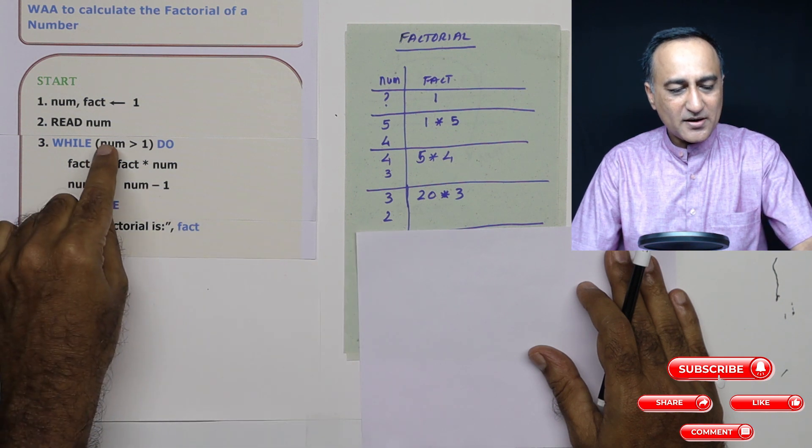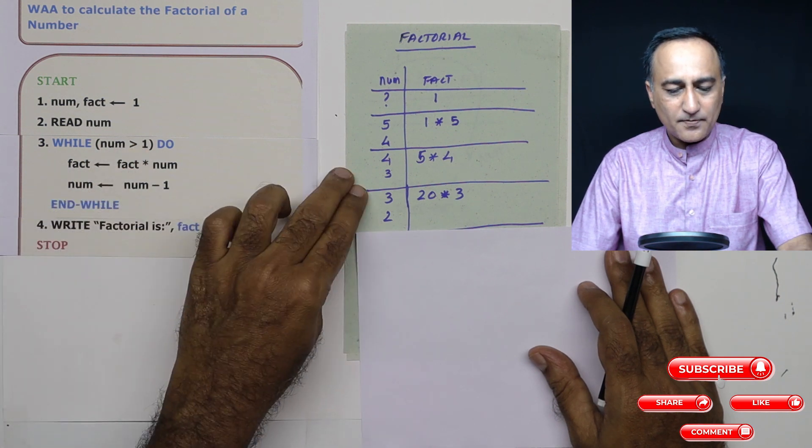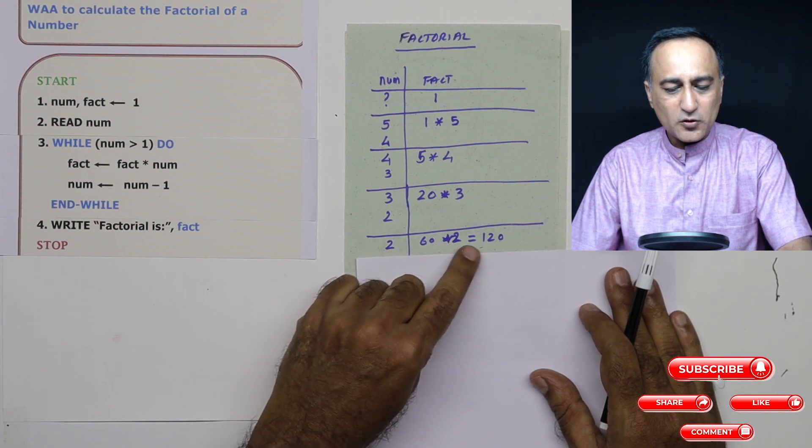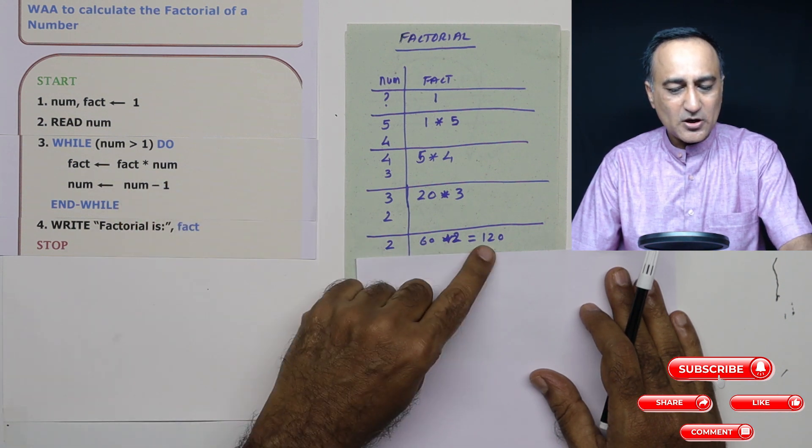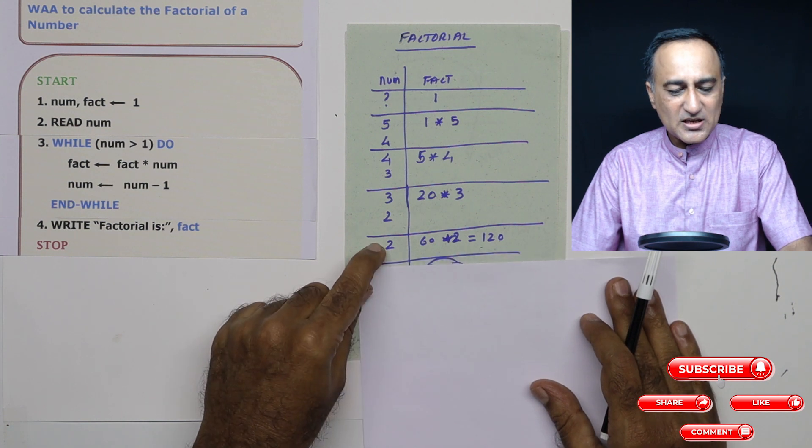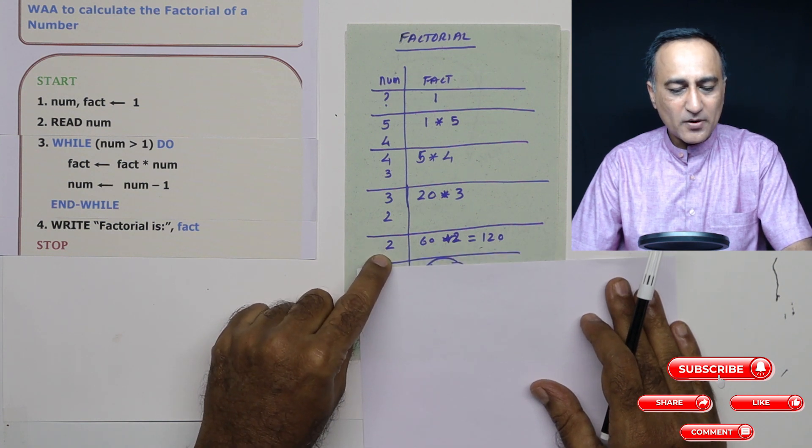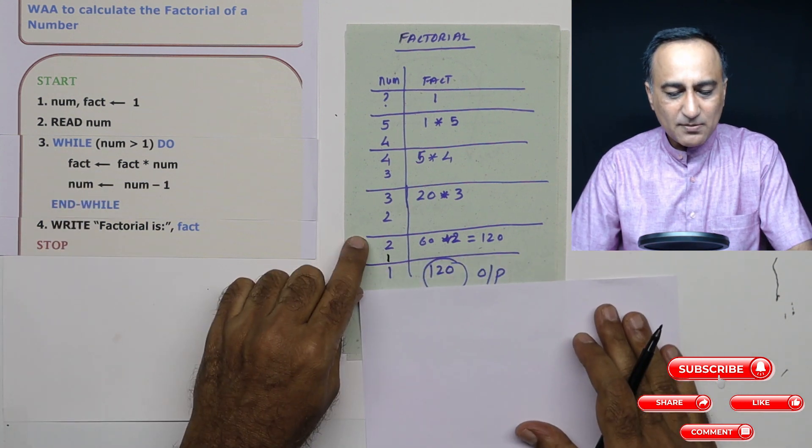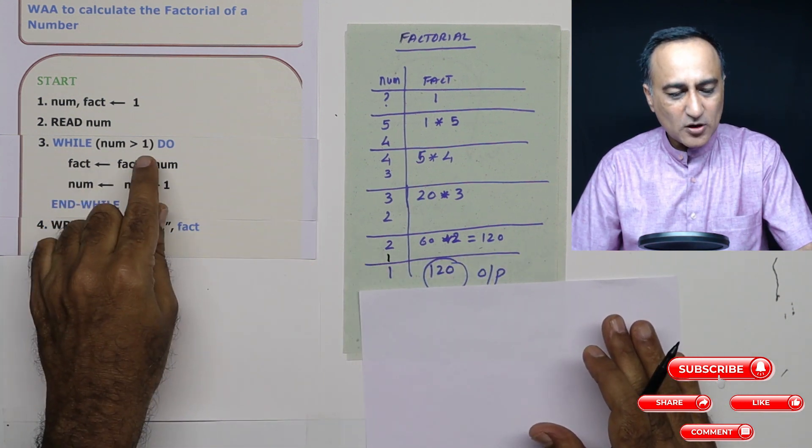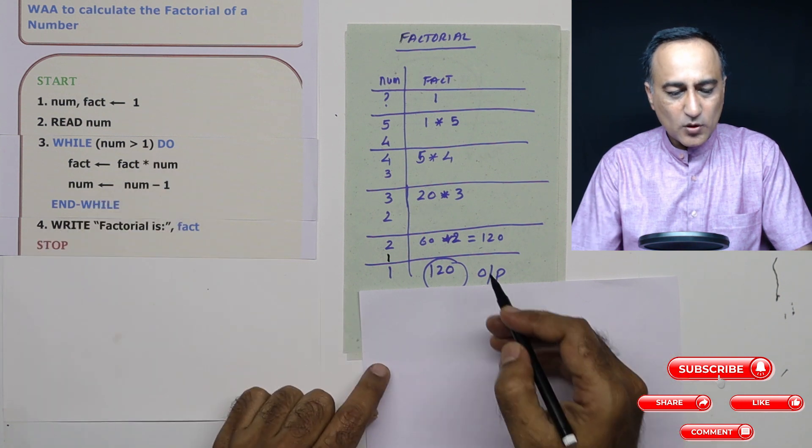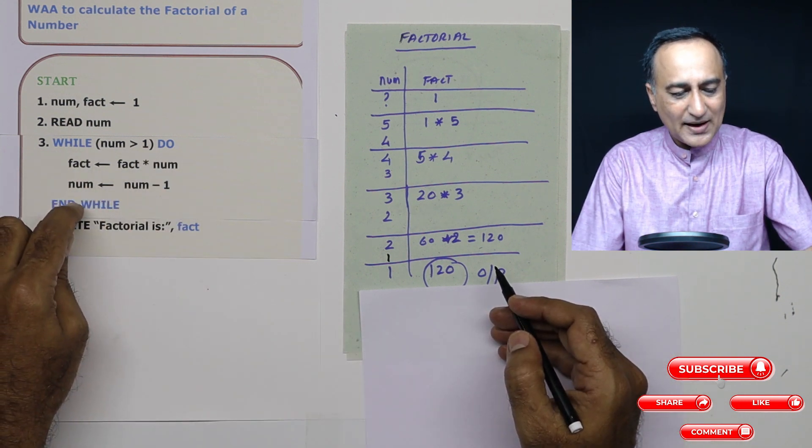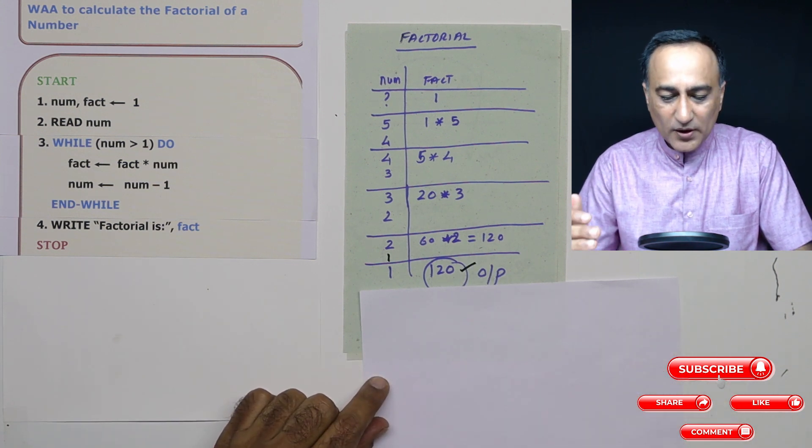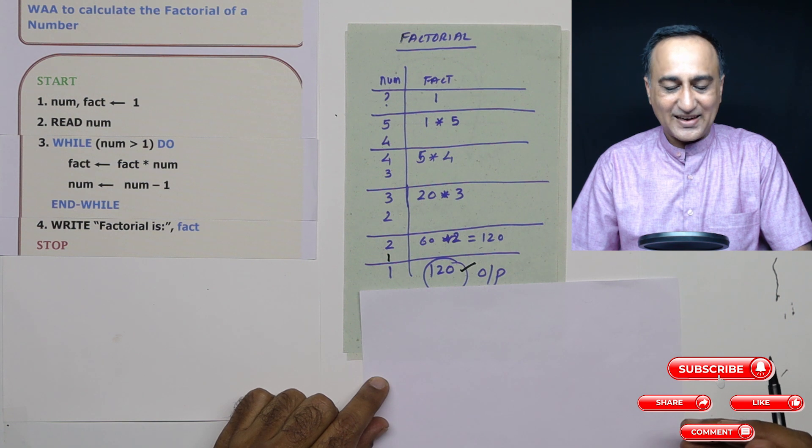Then I go back here, two is greater than one is still true. Then I come back here. Then it is two. So 60 into two is 120. Fact is 120. At this stage, number becomes one. Number has to become one because here if you see number becomes one. Once number becomes one, one is not greater than one. So what will happen is this while loop will end, I'll come here and I'll write the factorial as 120. So 120 is going to come as the output on your screen.